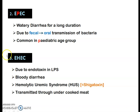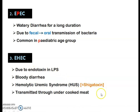The third type is EHEC (enterohemorrhagic E. coli), which causes bloody diarrhea — blood is present in the feces. Due to the endotoxin present in the LPS, it may cause hemolytic uremic syndrome (HUS). Shigella also causes HUS via Shiga toxin, and the endotoxin produced by EHEC causes similar symptoms. EHEC is transmitted through undercooked meat.